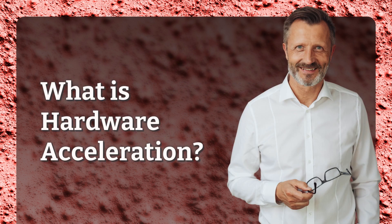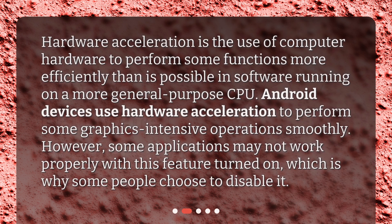What is hardware acceleration? Hardware acceleration is the use of computer hardware to perform some functions more efficiently than is possible in software running on a more general-purpose CPU. Android devices use hardware acceleration to perform some graphics-intensive operations smoothly. However, some applications may not work properly with this feature turned on, which is why some people choose to disable it.